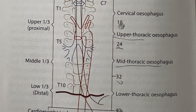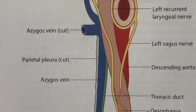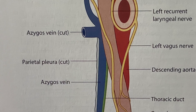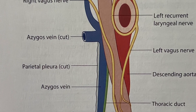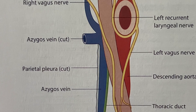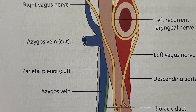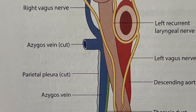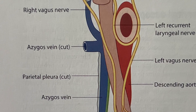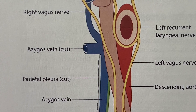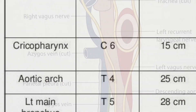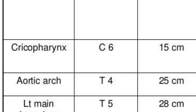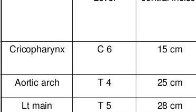Sometimes left atrium enlargement leads to indentation onto the esophagus on the anterior aspect just below the left main bronchus, also leading to a pseudo-constriction at the level of the left atrium. Knowledge of these constrictions and their measurements from the incisor teeth is clinically important when instruments are passed through the esophagus, such as during upper GI endoscopy or rigid esophagoscopy.